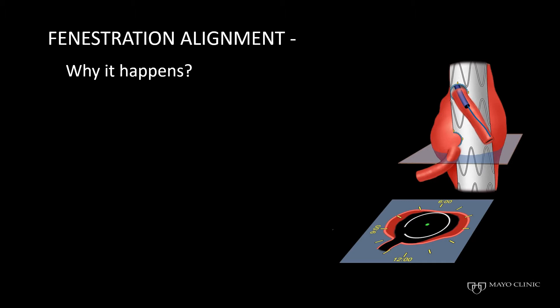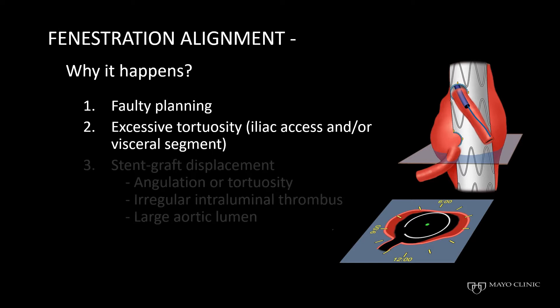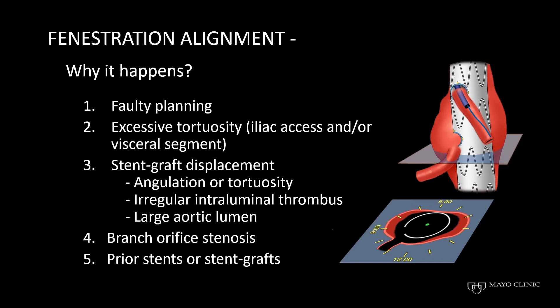Malalignment of fenestrations occurs because of faulty planning, excessive tortuosity in the iliac axis and/or visceral segment that may lead to inability to rotate the device, or stent graft displacement, which can be aggravated by deangulation and tortuosity, and also by large irregular thrombus that displaces the device, or when there is a lot of space in the aorta for the graft to be moved. It is worse when we have branch orifice stenosis because the target vessel is smaller and alignment is much more critical, and also worse when there are prior stents or stent grafts.